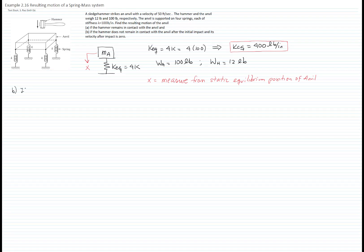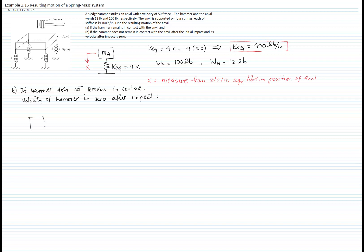Let's start now with Part B — the case that the hammer does not remain in contact with the anvil after the impact, so its velocity is equal to zero. We are assuming that all the linear momentum is transferred to the anvil. The mechanical system for this new condition has only the mass of the anvil and the equivalent spring constant 4k. There is no initial displacement condition because we are measuring x from the static equilibrium position of the anvil only, without the extra mass of the hammer.